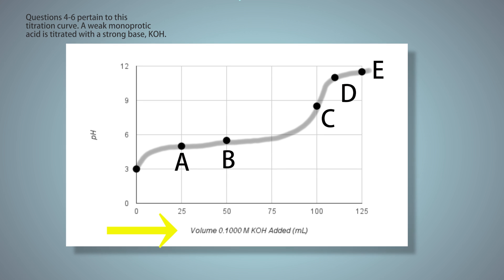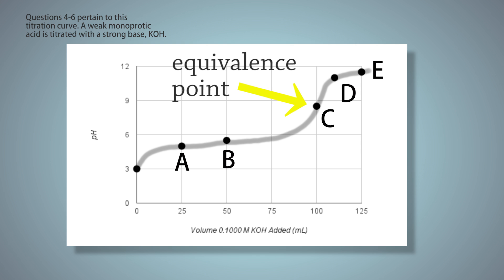A titration curve typically has the volume of the titrant, usually a strong base, on the x-axis, and the resulting pH on the y-axis. There's an equivalence point on the graph where all of the starting solution has been neutralized by the titrant. So here we started with an acid, and it's the point where you've added enough base to neutralize the acid. You can usually eyeball this point - it's where the concavity of the graph changes.